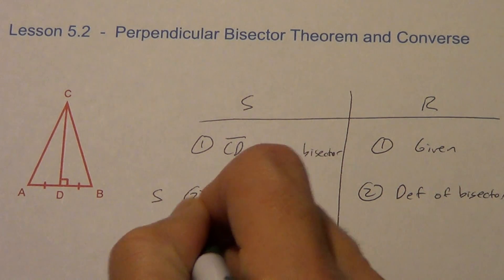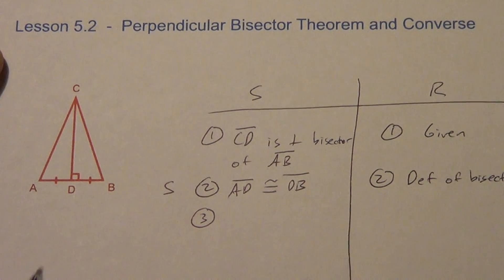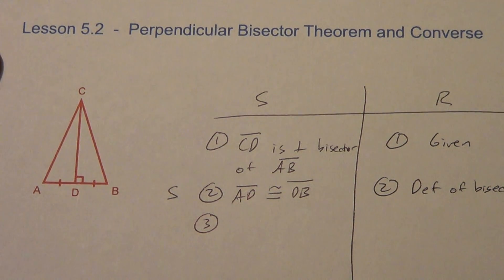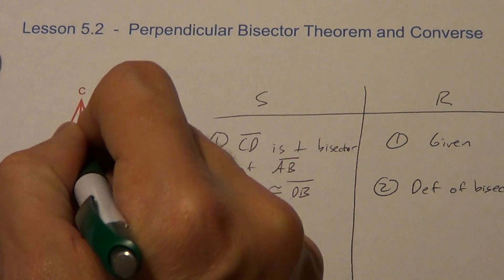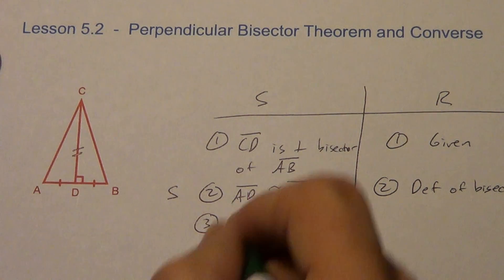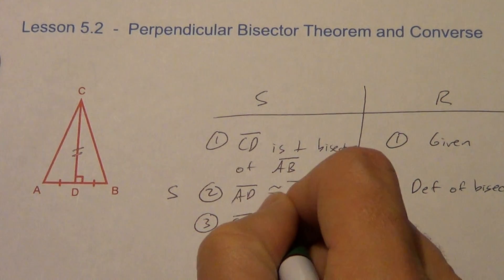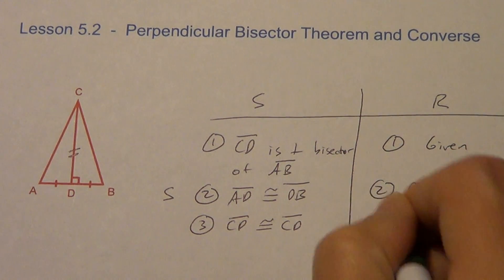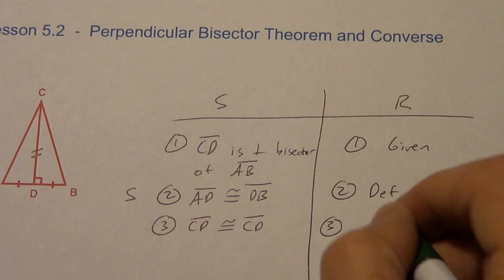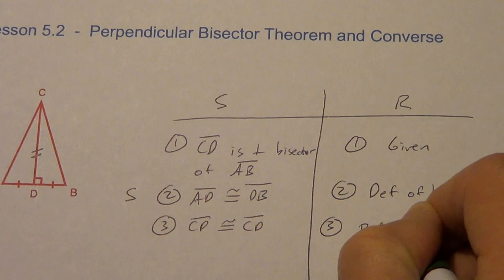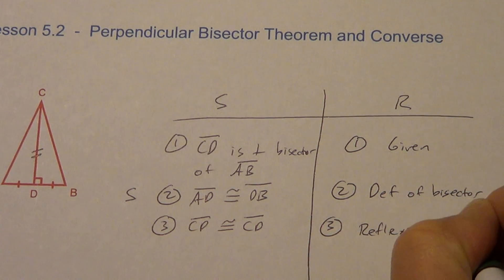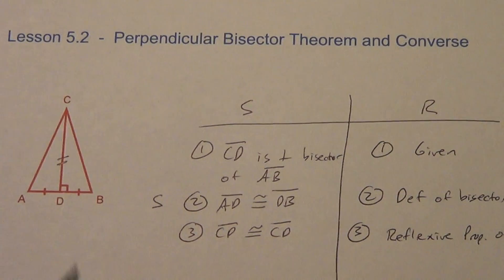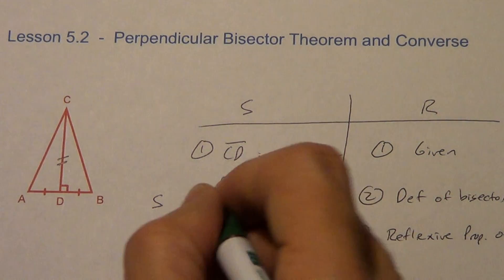Is there a second side that would be pretty easy to get? CD is congruent to itself. Why is something always congruent to itself? That's your reflexive property of congruence. I already marked it in my picture, and I'm going to put an S for side right here.